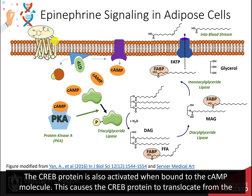For example, the binding of epinephrine to adipose tissue behaves in a similar way to the activation of energy-releasing pathways in the liver. In adipose tissue, epinephrine binds with the G-protein-coupled receptor that activates a downstream G-protein. The activated G-protein turns on adenylate cyclase, leading to the production of the second messenger, cyclic AMP.